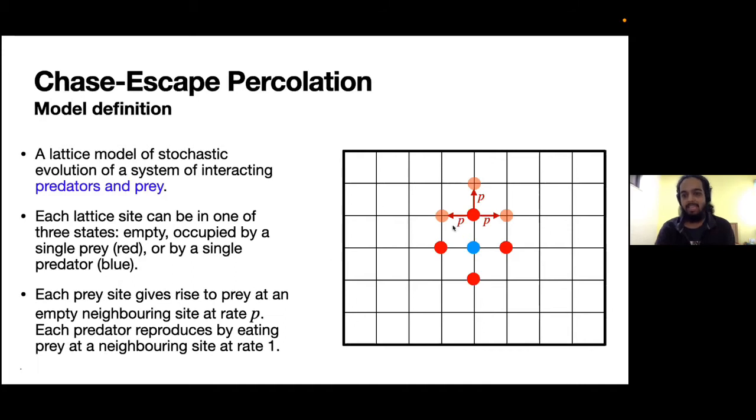The dynamical rules are simple. Each prey site can give rise to a single prey at an empty nearest neighbor site at rate p, whereas each predator can eat each of its neighboring prey at rate one. When it does eat the neighboring prey, the prey site turns blue.